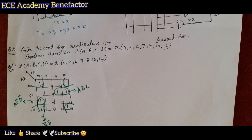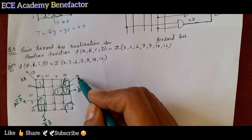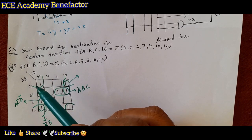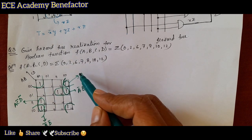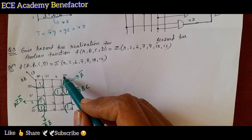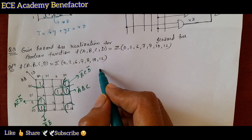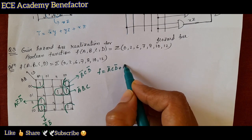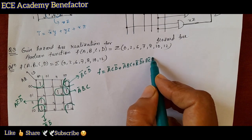To make this circuit hazard-free we need to add one overlapping group. The overlapping pair covers cells where a=0 in the two rows and c=1, d=0 in the column, giving the term ācd̄.